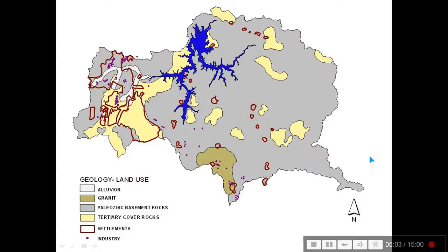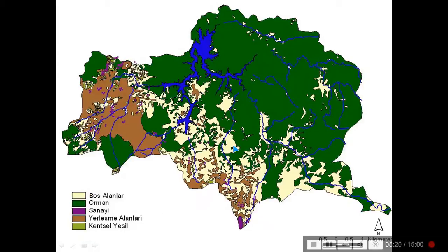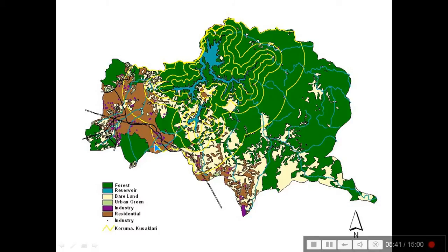This is one of the examples, showing various things: industry, settlements, territory, cover rocks, basement rocks, granite and alluvian. Talking about the other aspect, this shows areas which are not directly related to urban settlements but closely impacting them. This is the combination of those and their effect on each other.